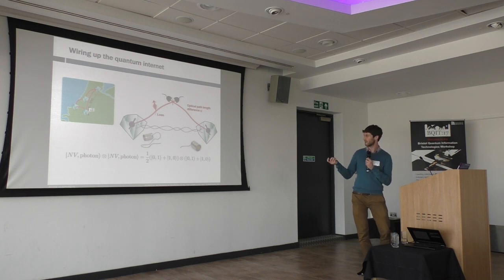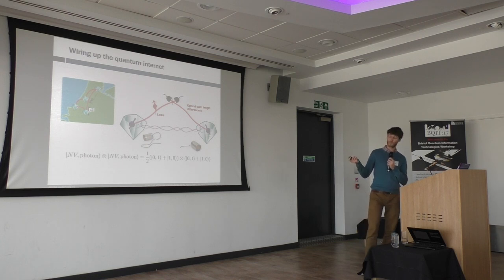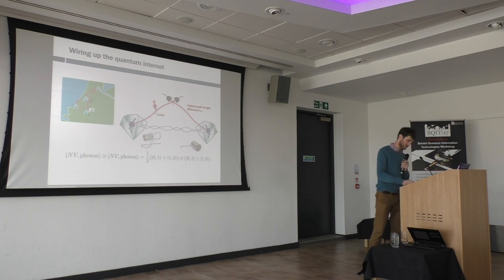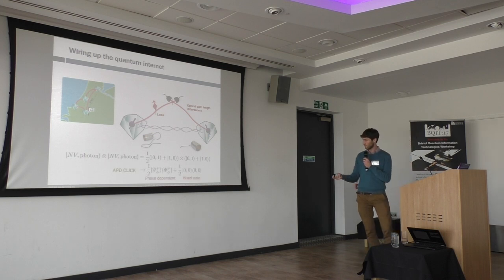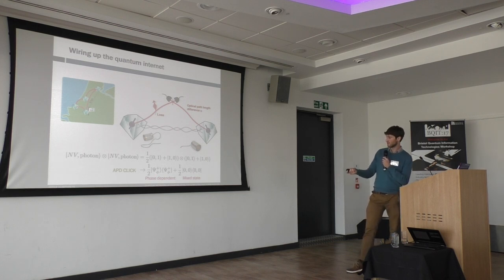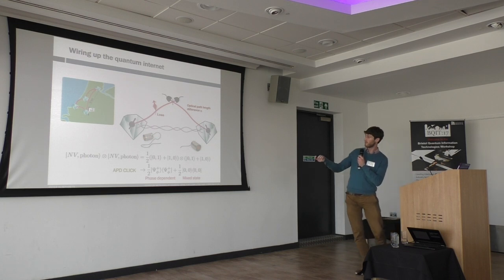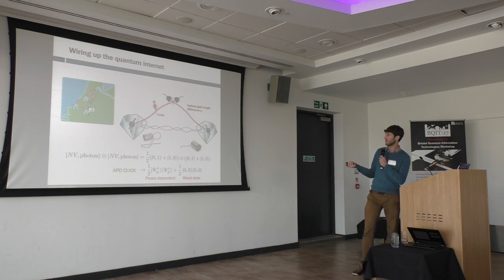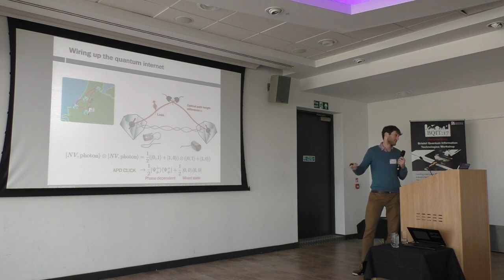In any real system there are significant imperfections. In particular, we have optical losses, and we don't stabilize this optical path length, so there's an unknown phase that the state acquires. Instead of getting a nice entangled state, we get an entangled state with an unknown phase. Furthermore, there's an admixture with a mixed state because, in the limit of large losses, if you get a click you know one NV was in the bright state, but it's equally likely that the other one was also bright and you've simply lost that photon.